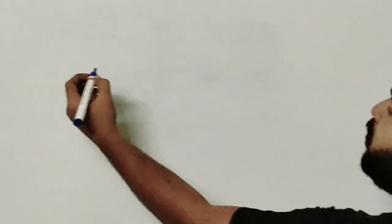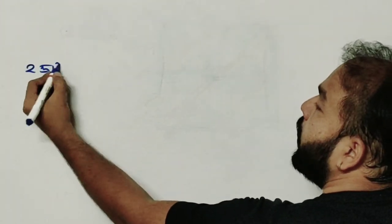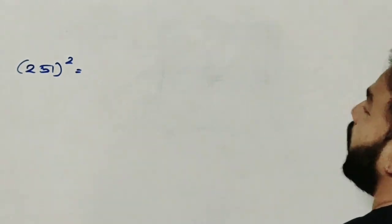Let us find the square of another 3 digit number. So let us take 251 square.